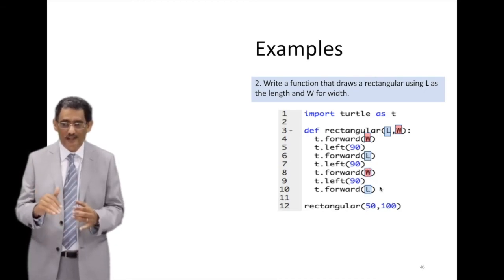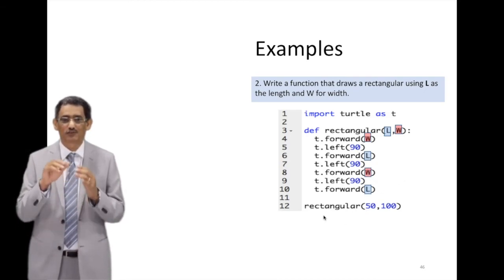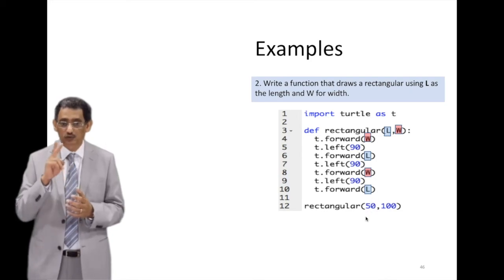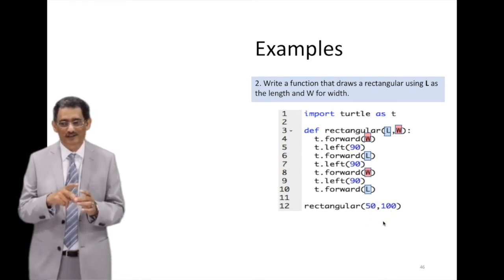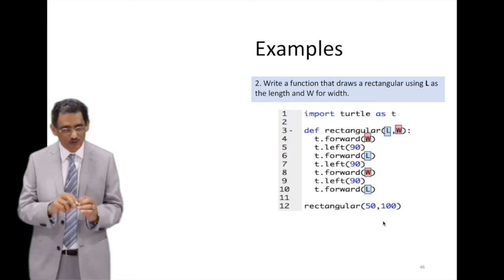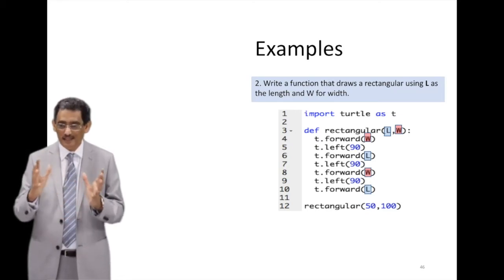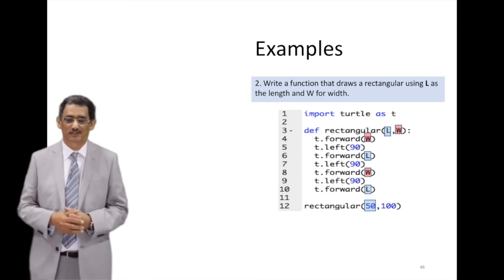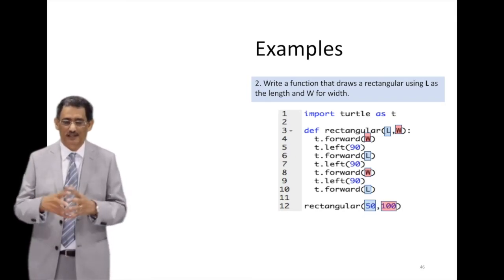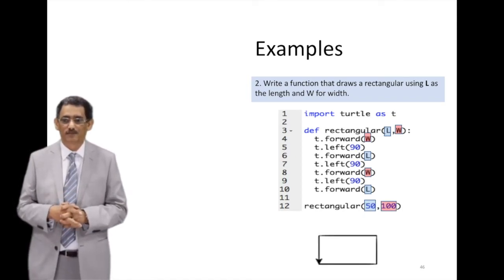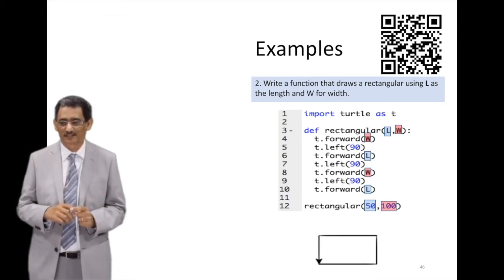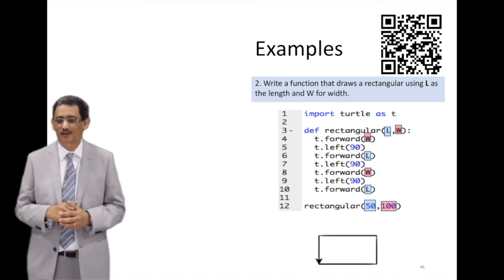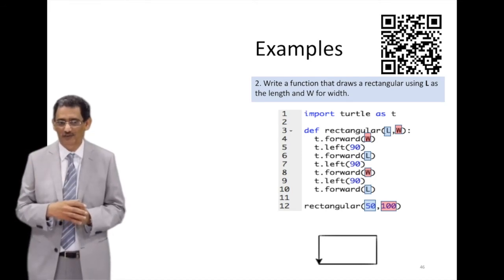When we call it at line 12, we need to supply two things - one value for L, one value for W, and we should have a comma in between. And this will draw the square, which you can see on the screen, or rectangle on the screen. And this is a function that accepts two parameters. And you can scan the QR code and you get to the live code on Replit.